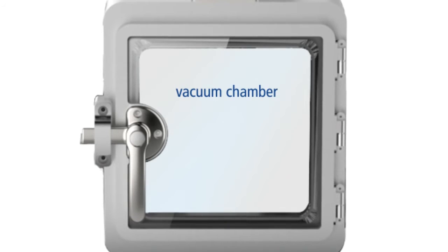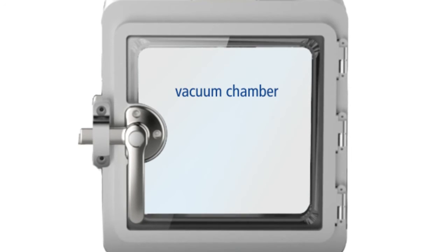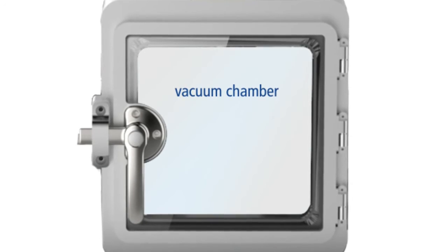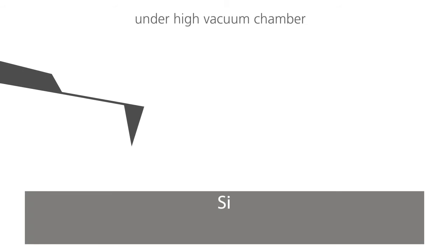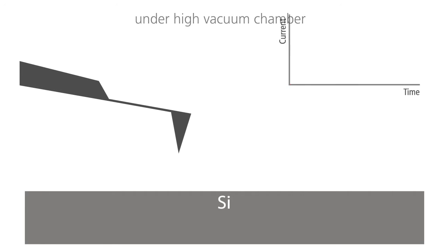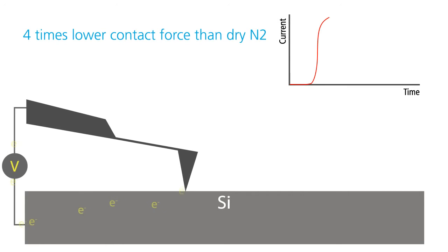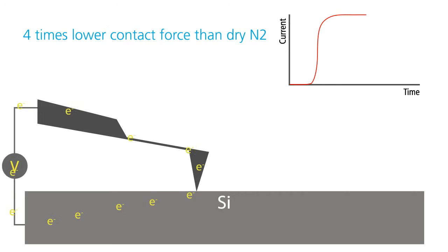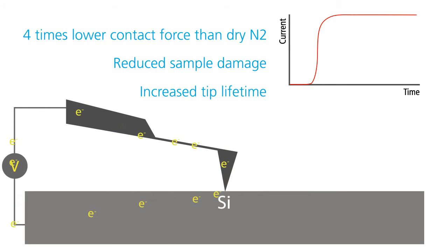AFM measurement in a high vacuum environment addresses these issues head on. Oxidation is prevented in the absence of ambient air, which in turn decreases by 4 times the tip-sample force load compared to alternate processes using dry nitrogen environments.